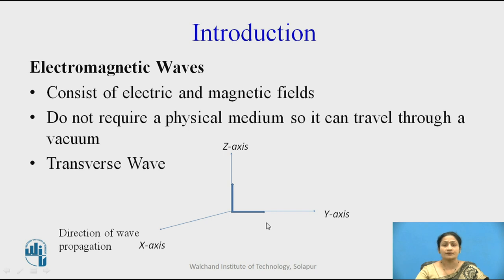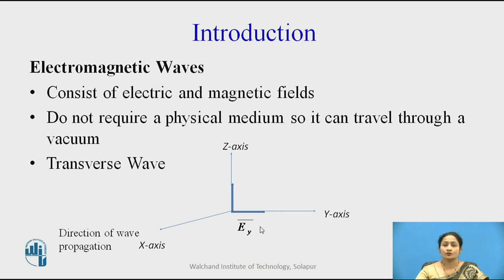If you see in this diagram, we have plotted three axes: x-axis, y-axis, and z-axis. We are representing the wave propagating in the x-direction, the electric field in the y-direction, and the magnetic field in the z-direction. From this, it is clear that the electric field and magnetic field are perpendicular to each other and they are perpendicular to the direction of propagation.